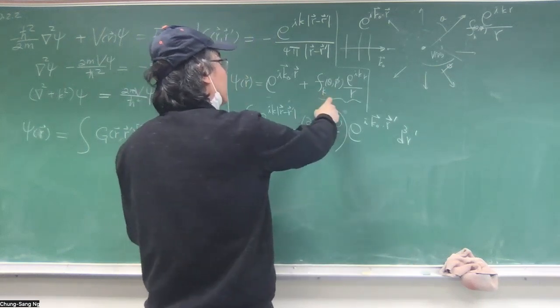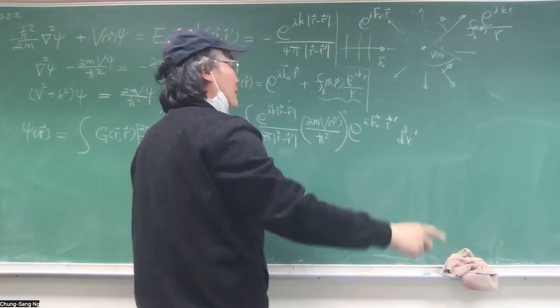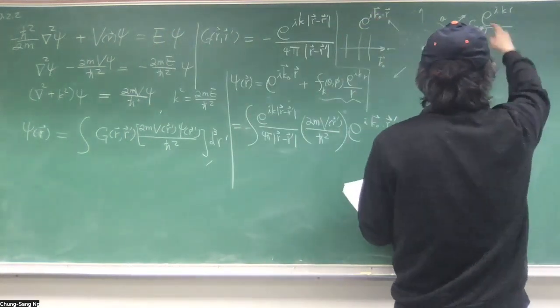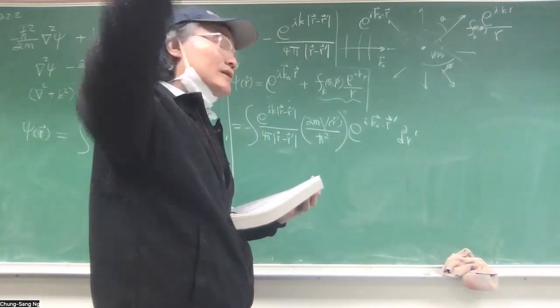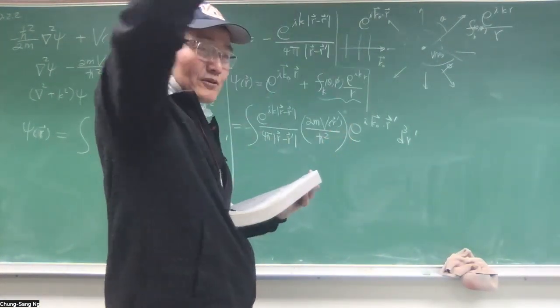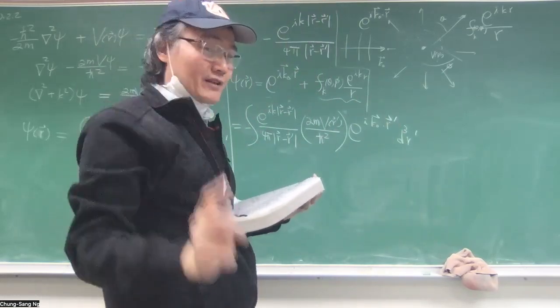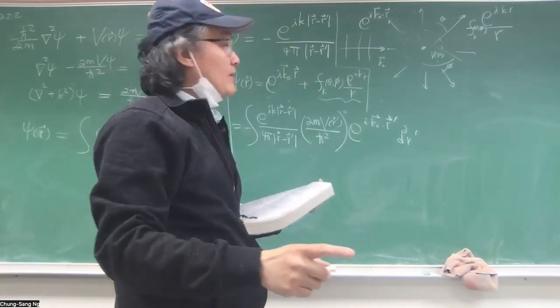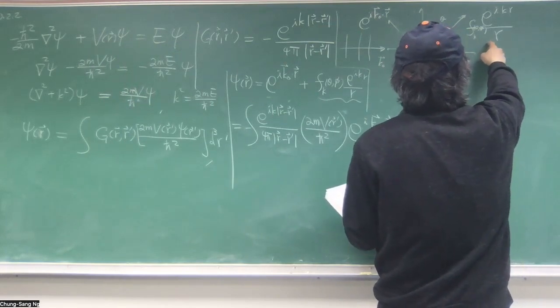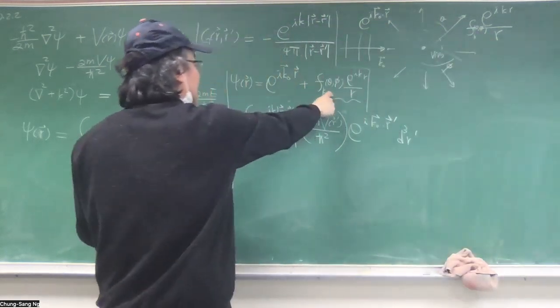You know the momentum of the incoming wave, the incoming particle. You know K sub 0, you know the direction. What you want to find is how much is scattered in a given direction. And so this one will be measured, say, by a detector at a certain angle.